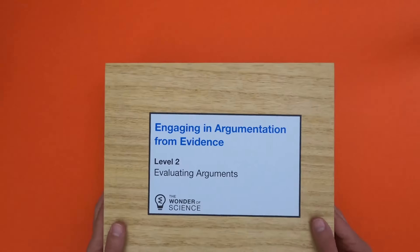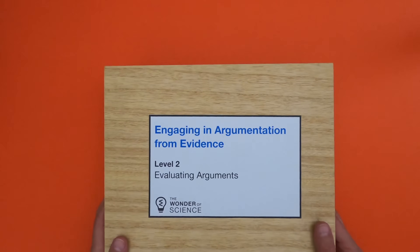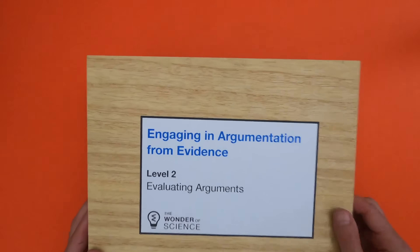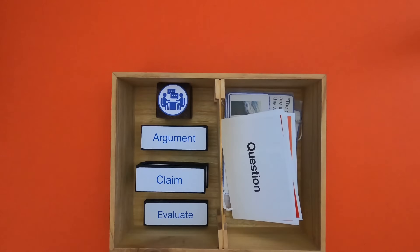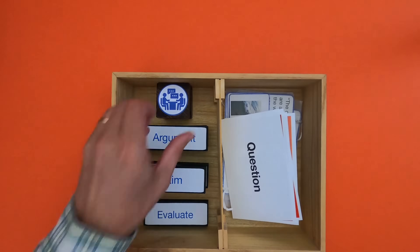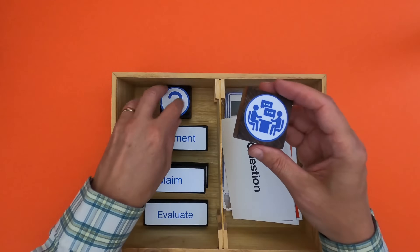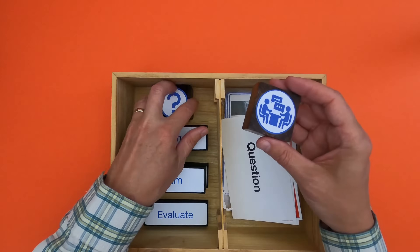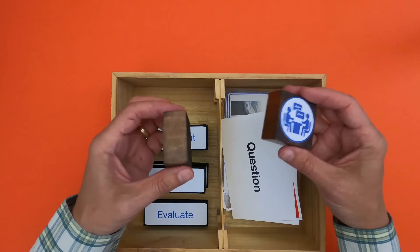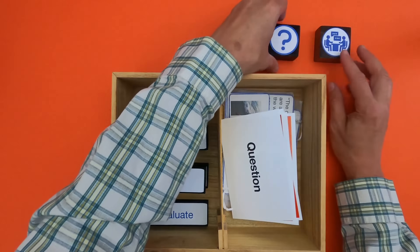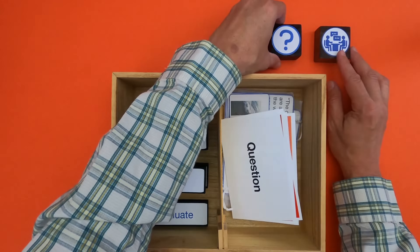Hi, it's Mr. Anderson and this is a mini lesson on engaging in argumentation from evidence, level two: evaluating arguments. The icon for argumentation is two people, and the reason why is a lot of the time an argument takes two people, and so we're going to do one of those in this video.